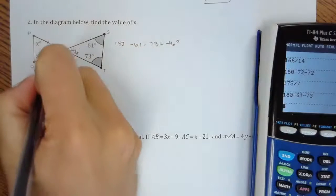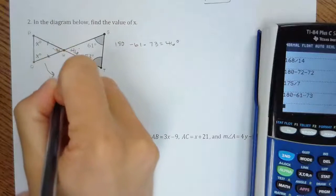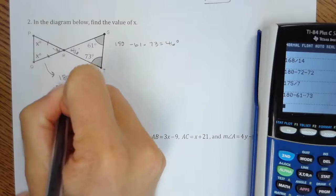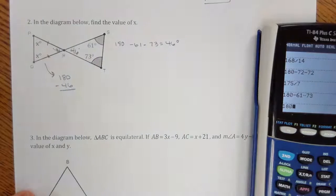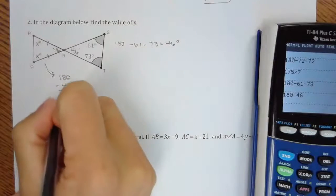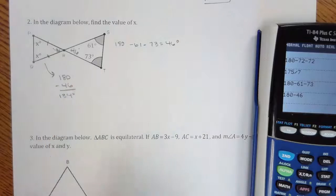So right here, to find x, if we do 180 minus 46, we get 134 degrees.